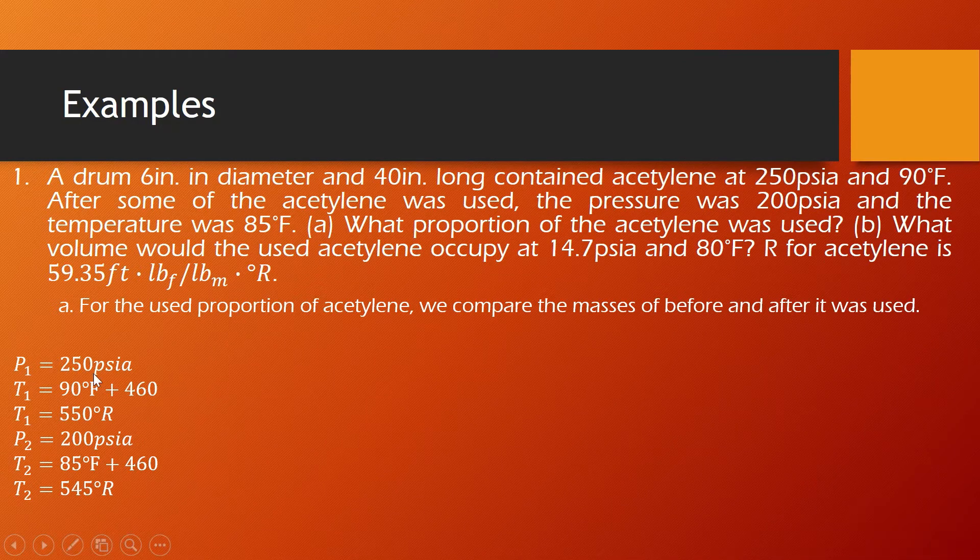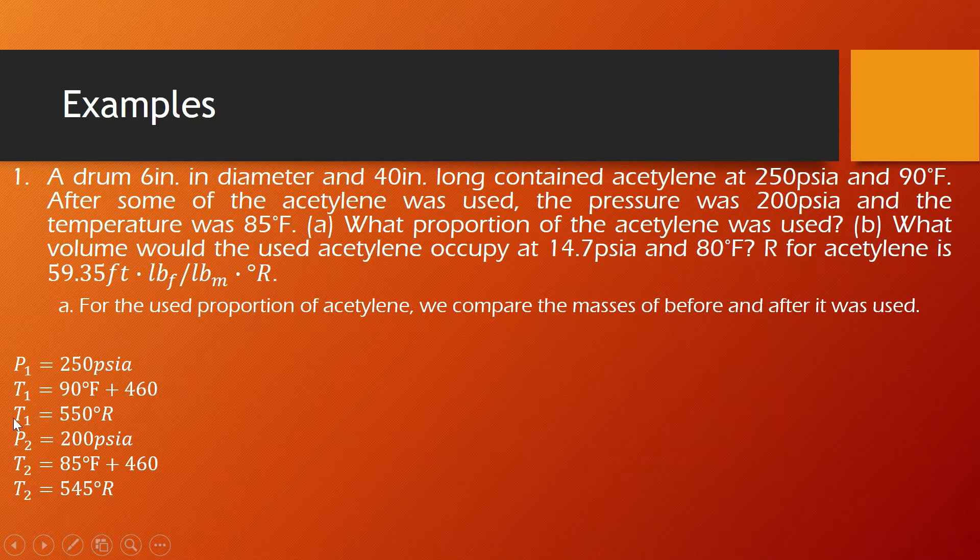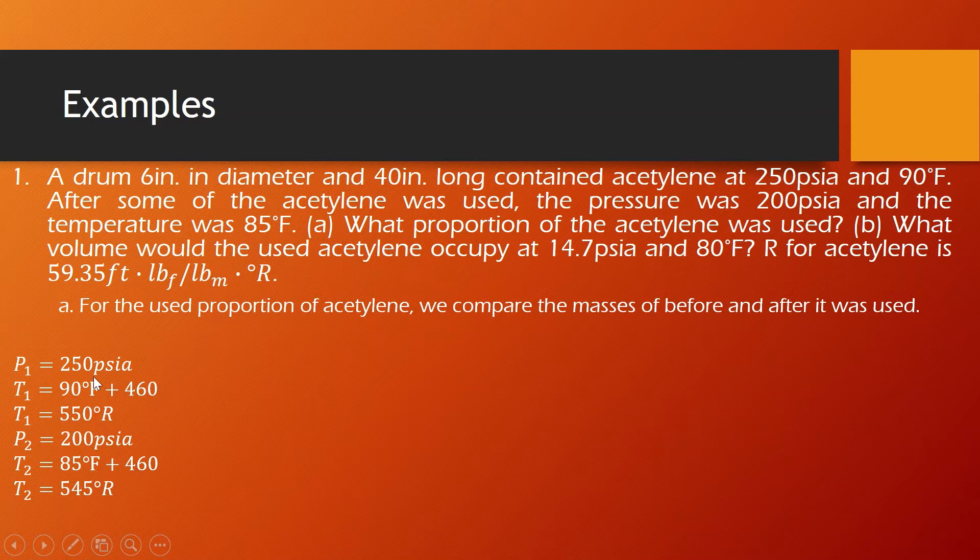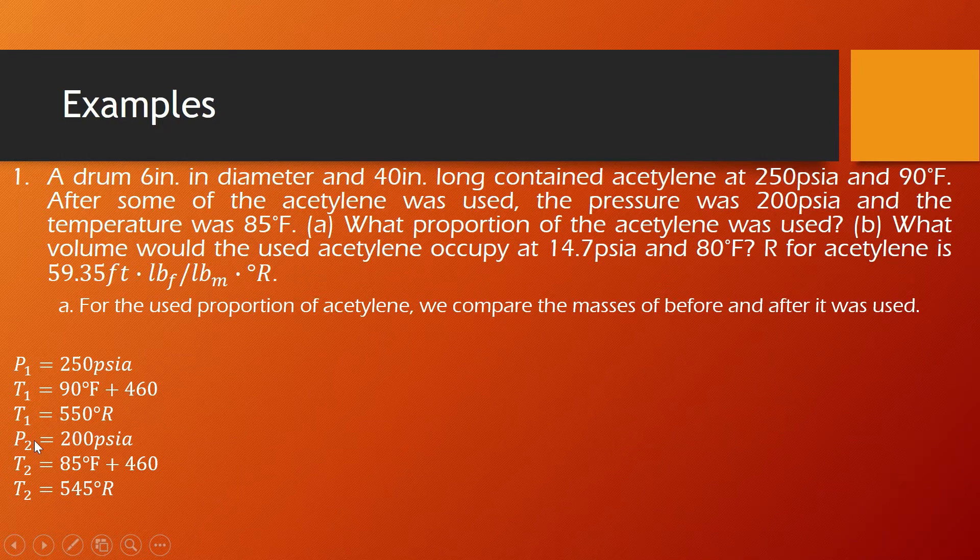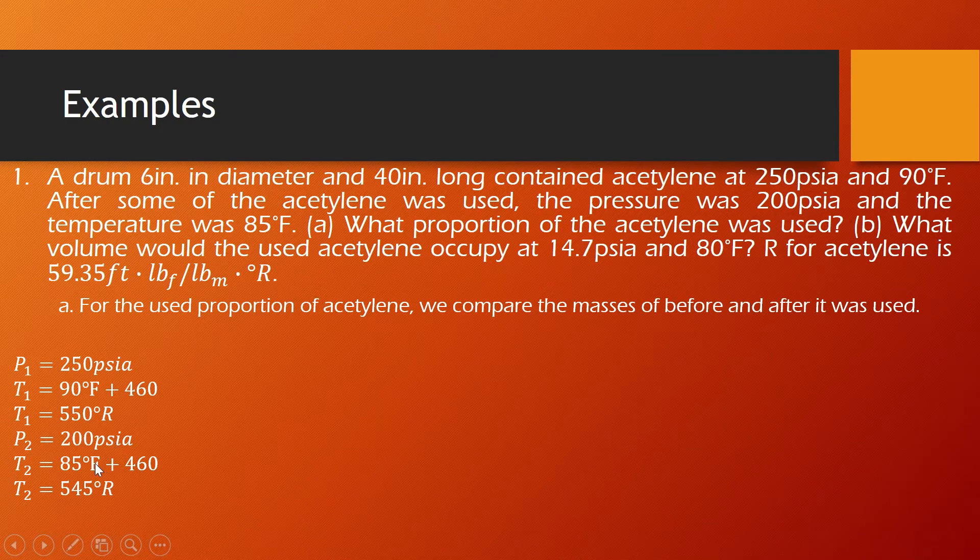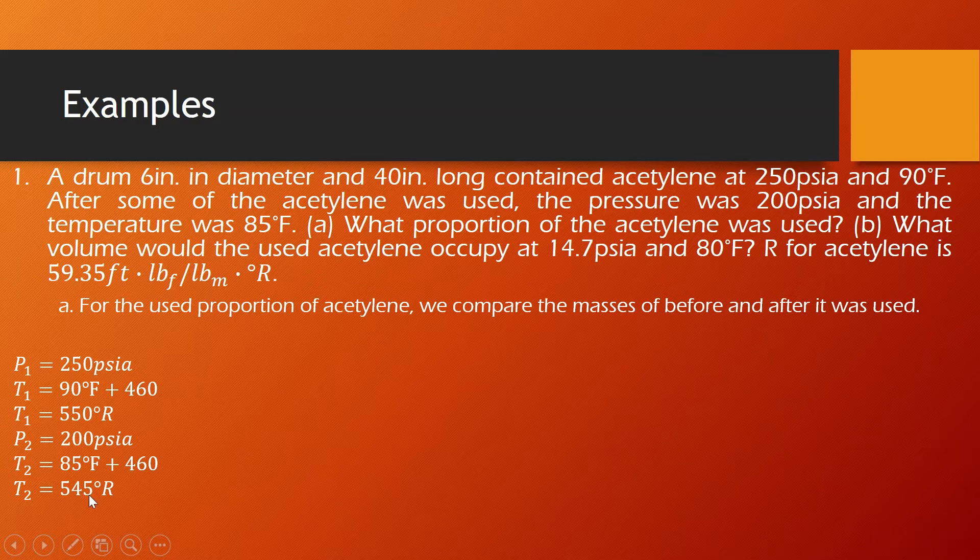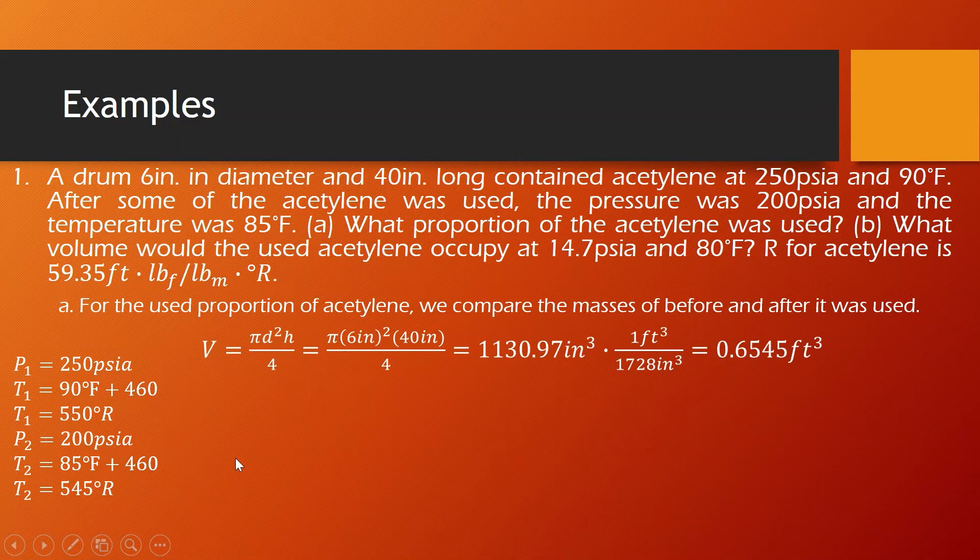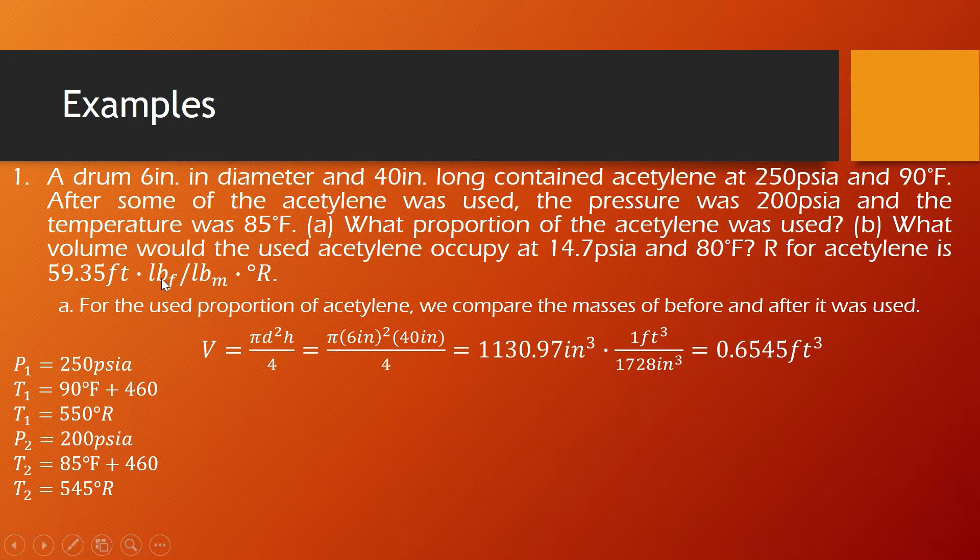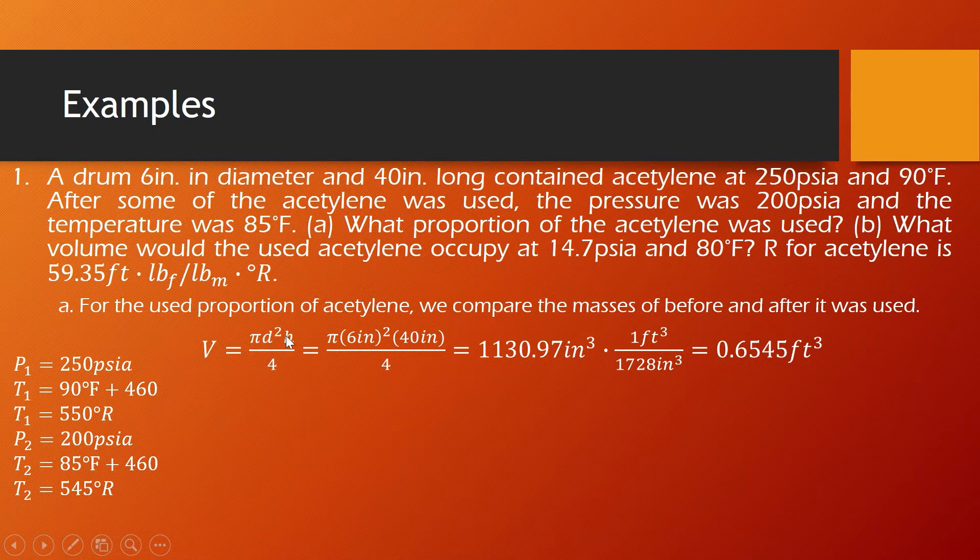So based on the given, original pressure is 250 psia and original temperature is 550 degree Rankine. We are going to add 460 to our 90 degrees Fahrenheit so we can get the equivalent absolute temperature in degree Rankine. The pressure 2 is 200 psia and the temperature is 545 degree Rankine. And then solving for the volume of the drum using the volume of the cylinder formula,